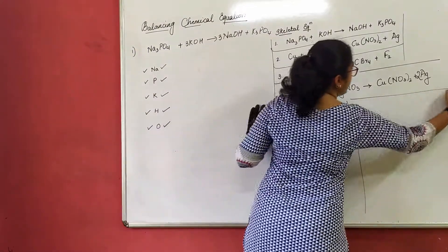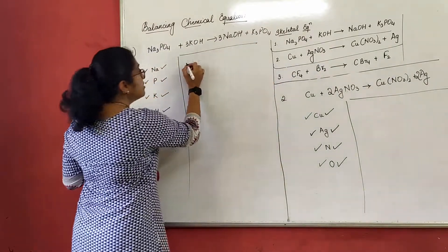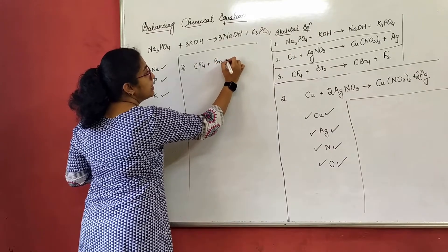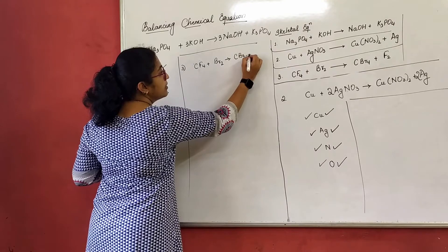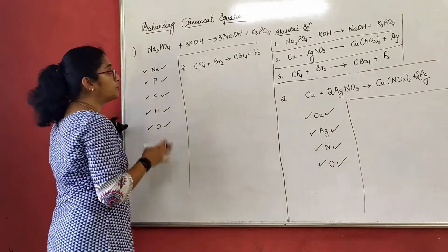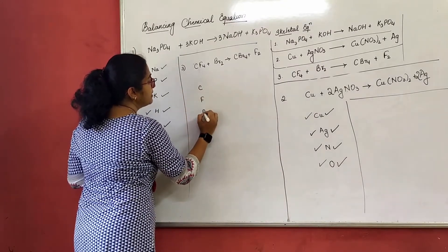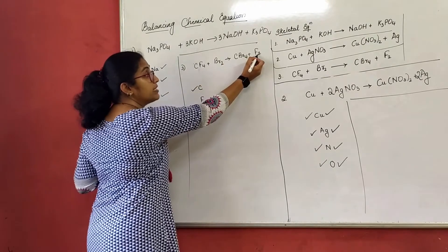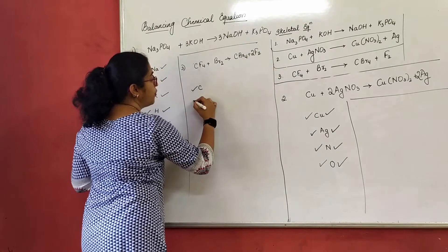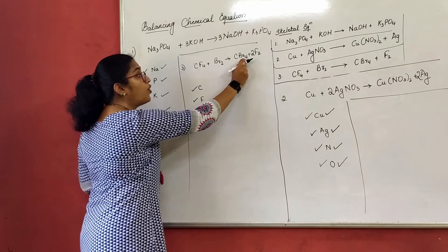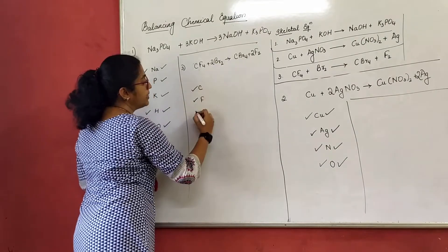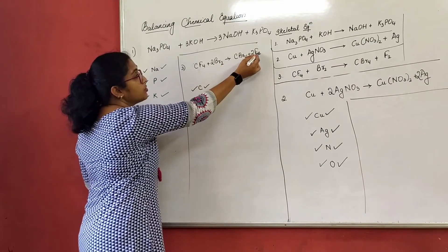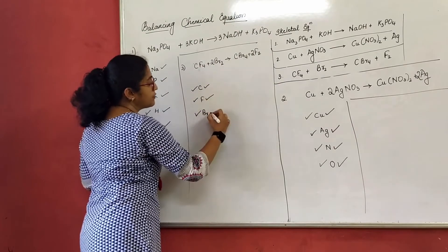The last equation: CF₄ plus Br₂ will give you CBr₄ plus F₂. We don't have oxygen here. Write the elements: carbon, fluorine, and bromine. Carbon is 1 and carbon is 1 — balanced. Fluorine is 4 on reactant side and 2 on product side, so I write coefficient 2 before F₂. Two twos are four — balanced. Bromine is 2 on reactant side and 4 on product side, so I write coefficient 2 before Br₂. Two twos are four — balanced. Cross-verify: carbon is 1 and 1 — balanced. Fluorine: 4 and two twos are 4 — balanced. Bromine is 4 and 4 — balanced.